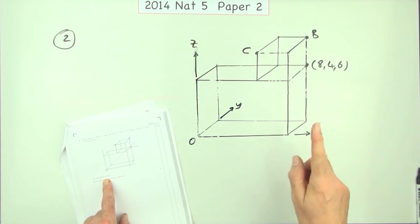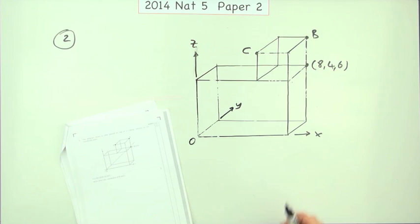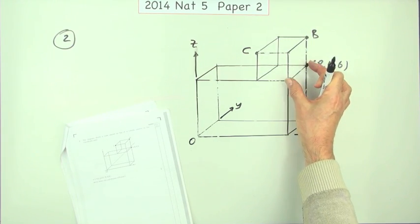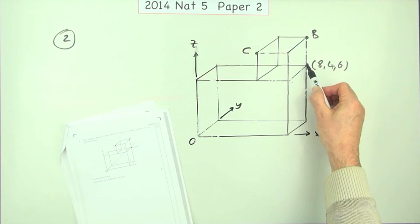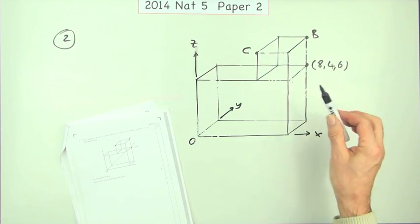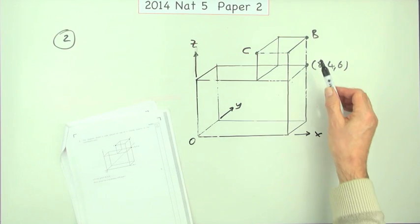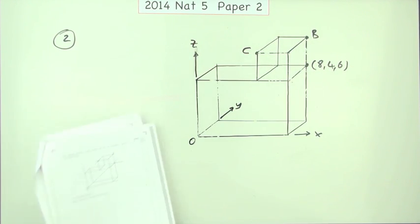What have we got? We've got three-dimensional coordinates here. It shows a shape made up of a cube sitting on top of a cuboid, and notice it matches width-wise with the cuboid. It gives you the coordinates of one point and asks for two marks—one mark each—what's the coordinate of B and what's the coordinate of C?